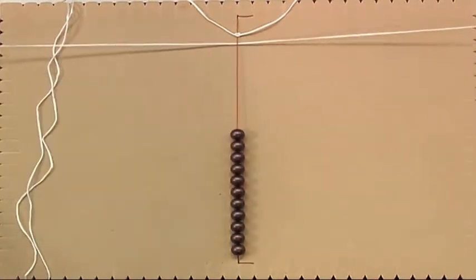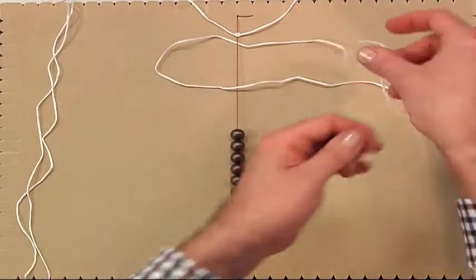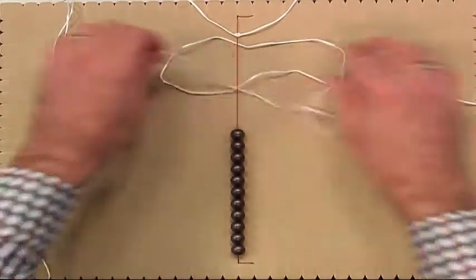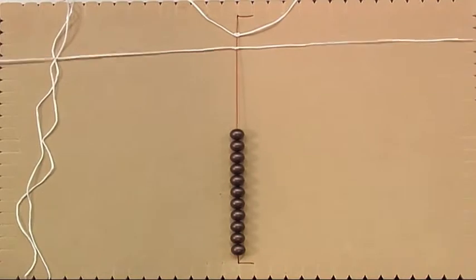And we pick up our second piece of satin cord. Exactly the same procedure. So we do square knots, on the left hand side, starting with the left hand side, and then the right.